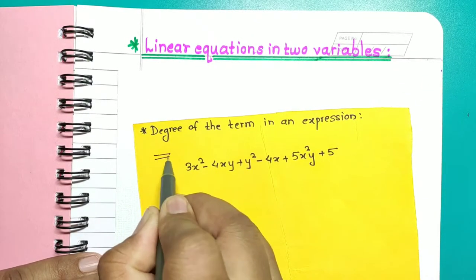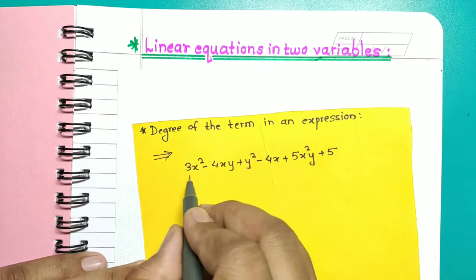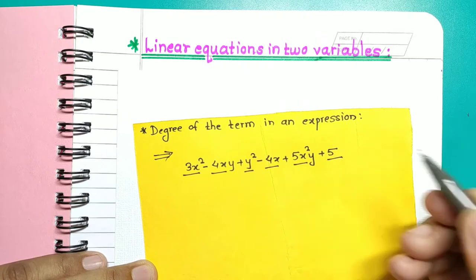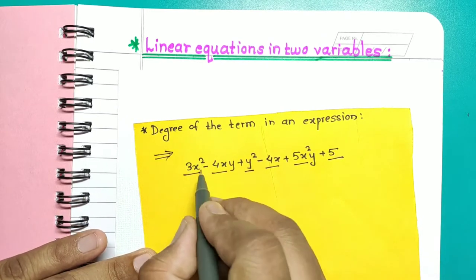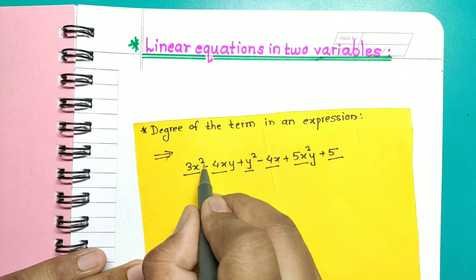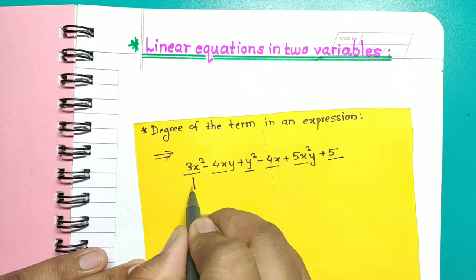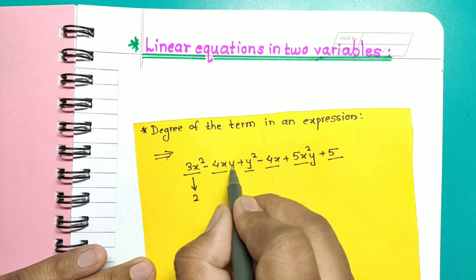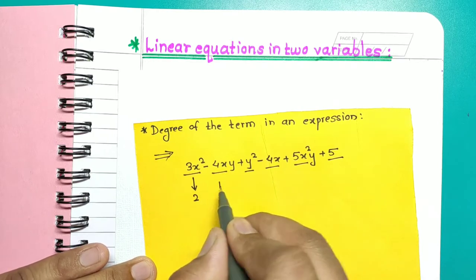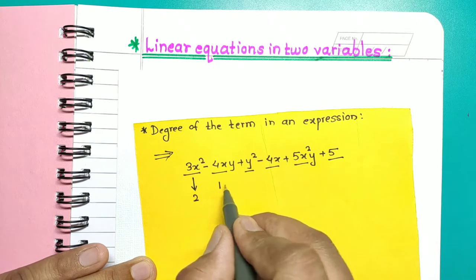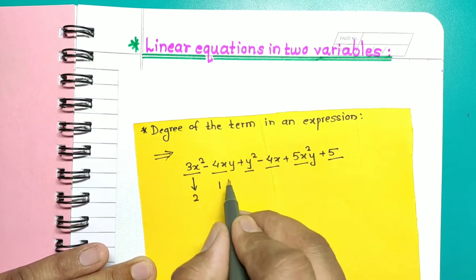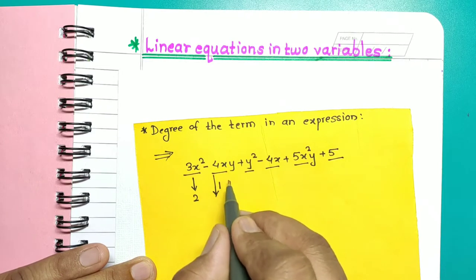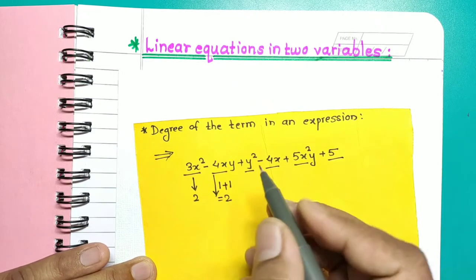Consider one expression — it contains six terms. In the first term there is variable x and its power is 2, so degree of this term is 2. In the second term there are two variables x and y; power of x is 1 and power of y is 1, so degree of this term is the sum of powers, which is 2.